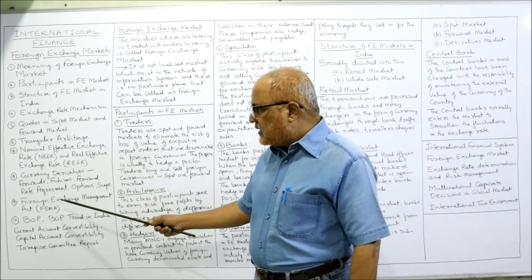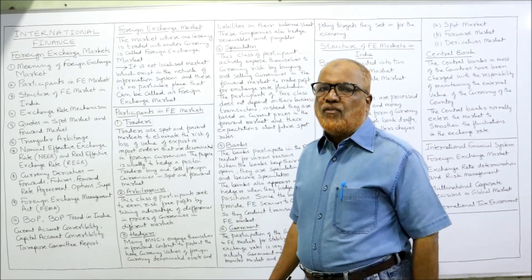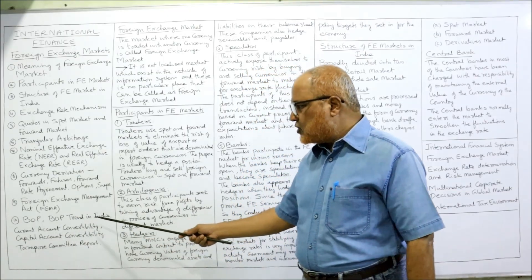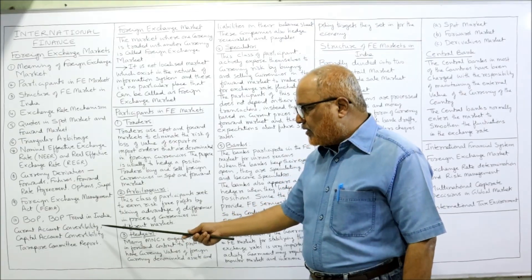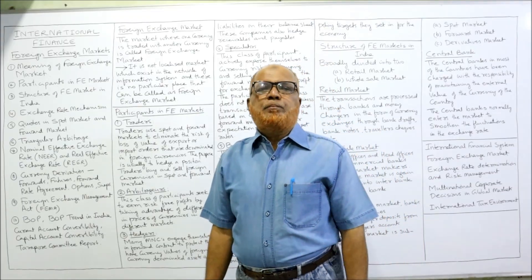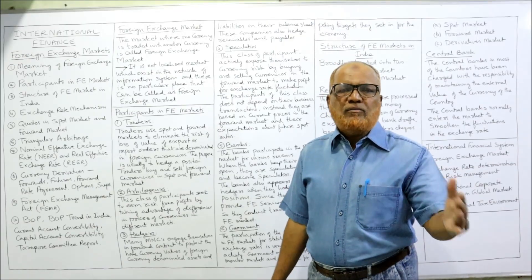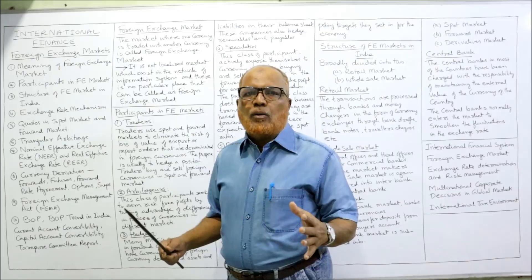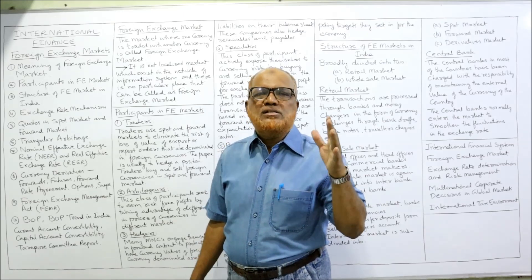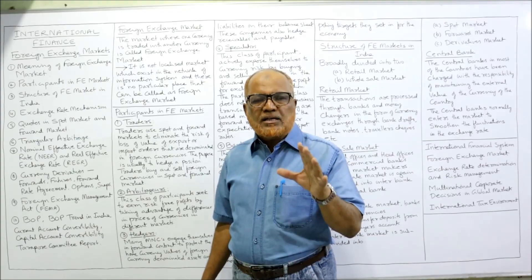We will also cover the Foreign Exchange Management Act (FEMA), which regulates foreign exchange transactions, Balance of Payment (BOP) and BOP trends in India, current account convertibility, capital account convertibility, and the Tarapur Committee Report. These are the topics in unit two. Students, remember — you can understand problems only when you understand the theory. Theory is the foundation. Have patience and take interest in the concepts before proceeding to problems.